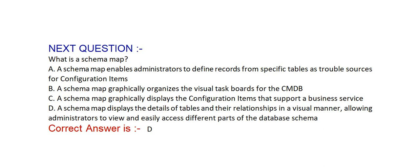What is a schema map? Option A: a schema map enables administrators to define records from specific tables as travel sources for configuration items. Option B: a schema map geographically organizes the visual task boards for the CMDB. Option C: a schema map graphically displays the configuration items that support a business service. Option D: a schema map displays the details of tables and their relationships in a visual manner, allowing administrators to view and easily access different parts of the database schema. Correct answer is option D.